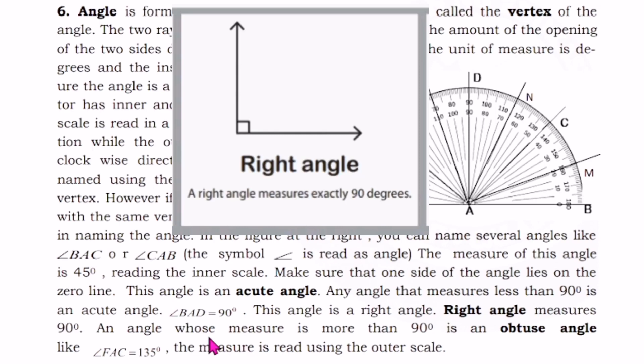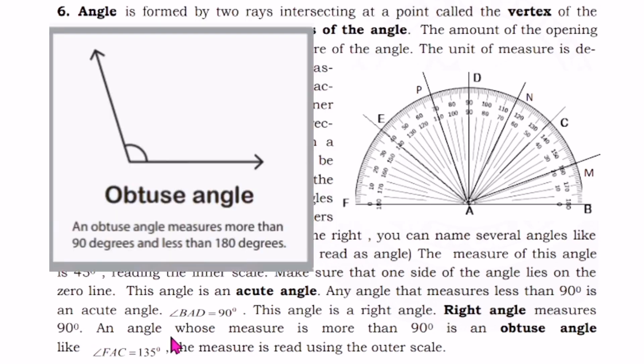Right angle measures 90 degrees. An angle whose measure is more than 90 degrees is an obtuse angle like angle FAC equals 135 degrees, the measure is read using the outer scale.